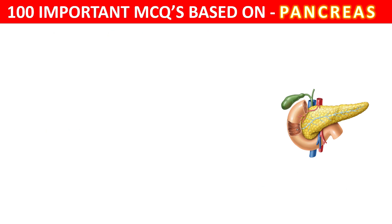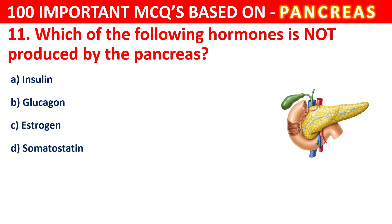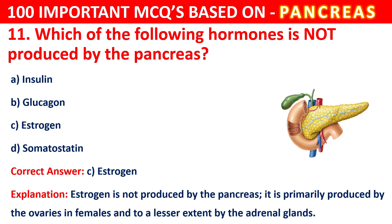Question 11. Which of the following hormones is not produced by the pancreas? The correct answer is C, that is Estrogen. Estrogen is not produced by the pancreas. It is primarily produced by the ovaries in females and to a lesser extent by the adrenal glands.